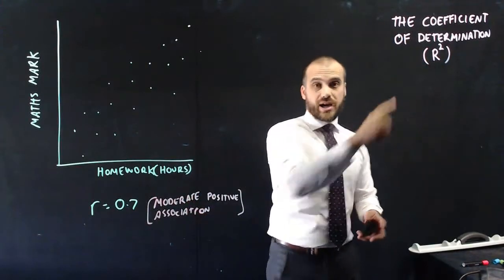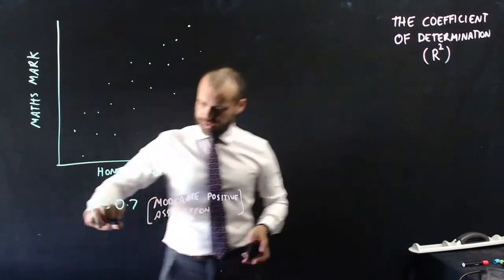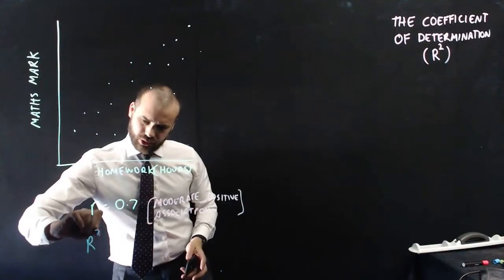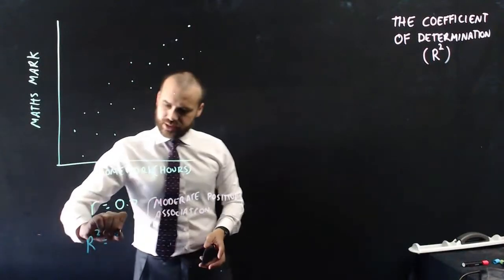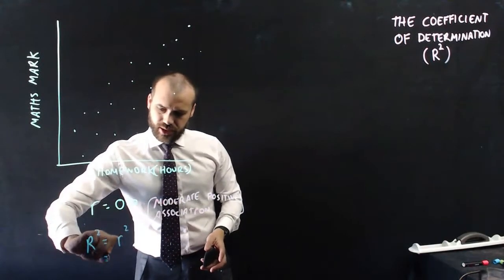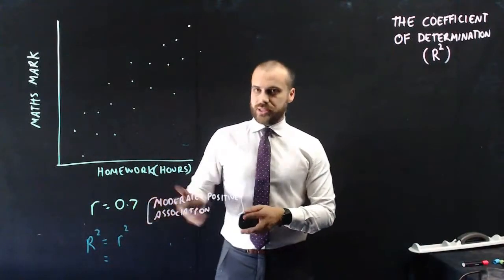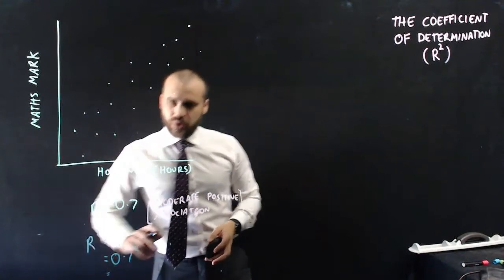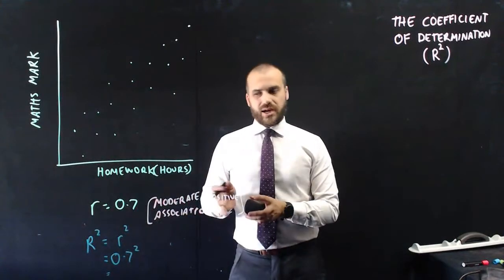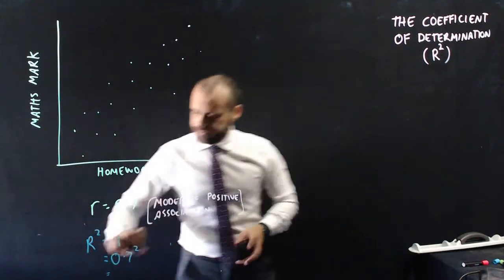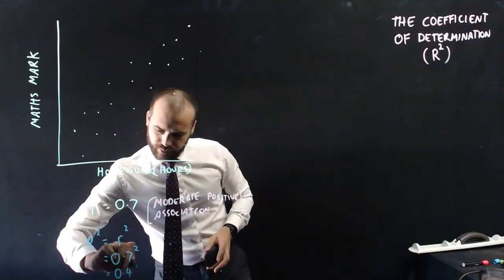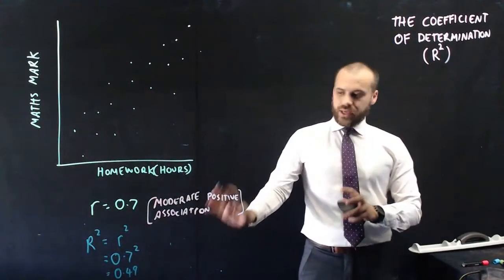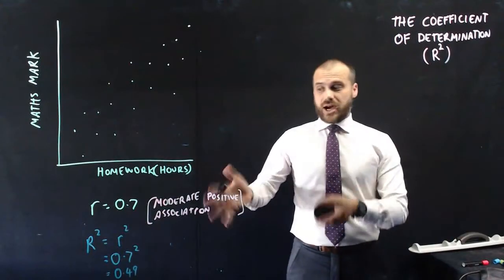Now I'm going to calculate r-squared, which is exactly what it sounds like. So r-squared is equal to this r-squared. In this particular instance, that's going to be 0.7-squared, which is going to be 0.49. Okay, now that's it. I've calculated r-squared.